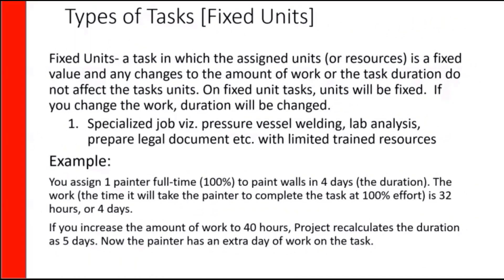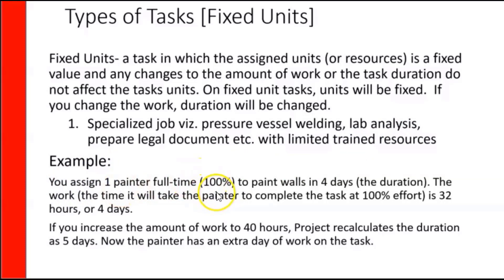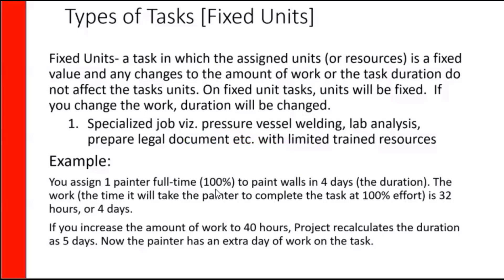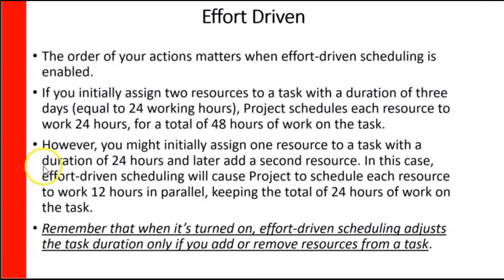Fixed units is a task in which the assigned units or resources is a fixed value, and any changes to the amount of work or the task duration do not affect the task units. On fixed unit tasks, units will be fixed. If you change the work, duration will be changed. For example, you assign one painter full time to paint walls in four days. The work — the time it will take the painter to complete the task at 100% effort — is 32 hours, or 4 days × 8. If you increase the amount of work to 40 hours, project recalculates the duration; now the painter has an extra day of work on the task at 100% effort.